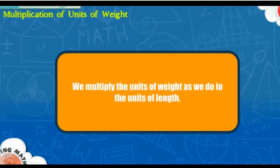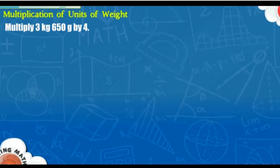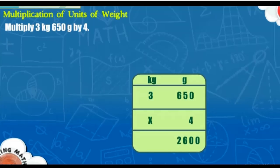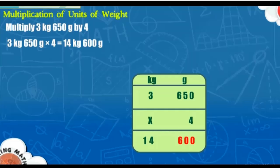Multiplication of units of weight: We multiply units of weight as we do with units of length. Multiply 3 kilograms 650 grams by 4. 3,650 × 4 = 14,600. So, 3 kilograms 650 grams multiplied by 4 is equal to 14 kilograms 600 grams.